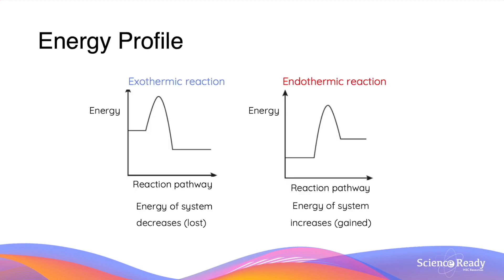Here are some energy profile diagrams which demonstrate the changes in energy levels of exothermic and endothermic reactions. The section on the left indicates the enthalpy, or inherent energy, of the reactants. The line on the right is the enthalpy of the products. The hump in between is called the activation energy — the minimum amount of energy required for the reaction to occur, which we will discuss more in the next section.